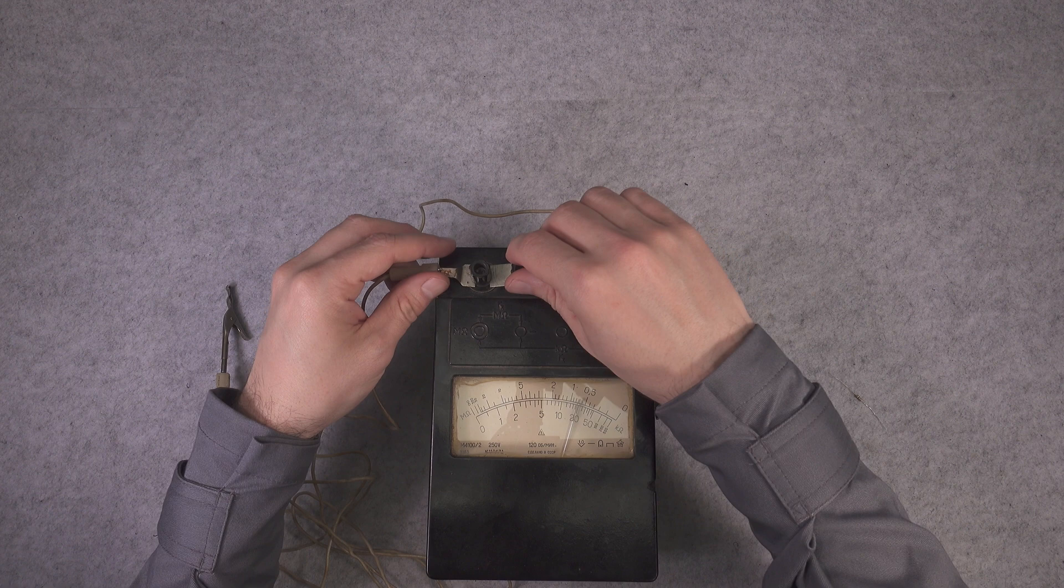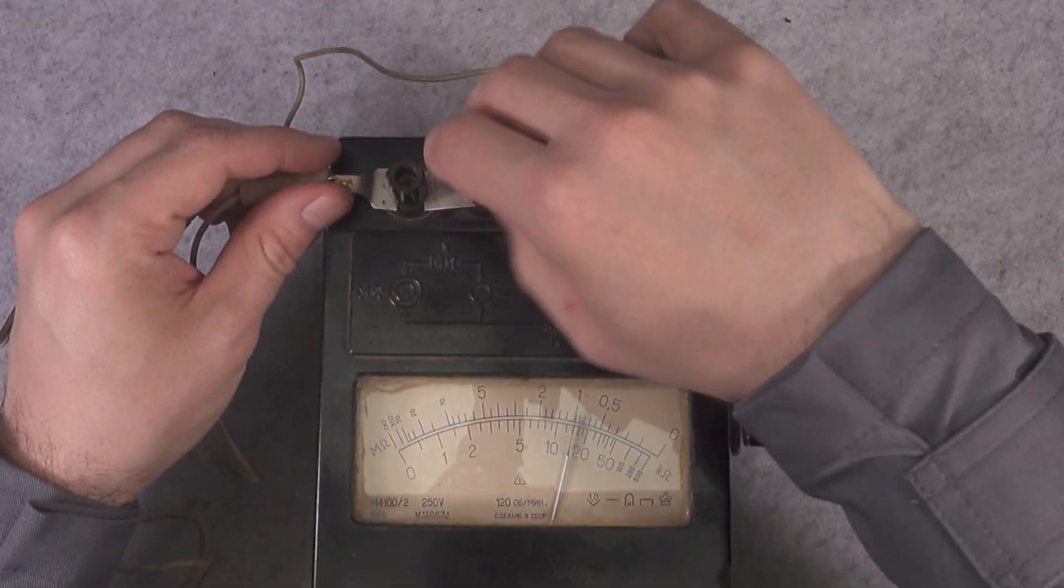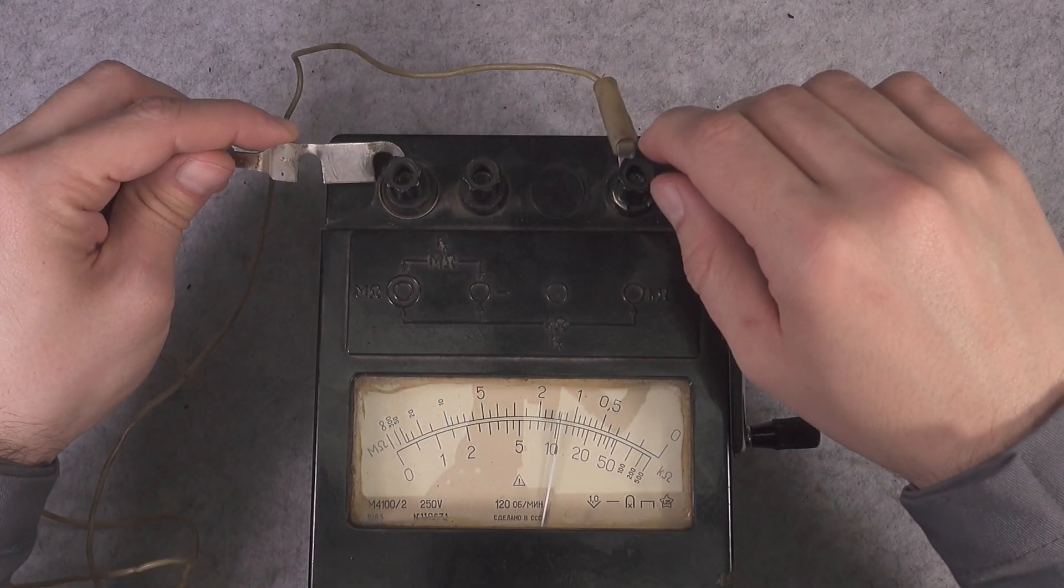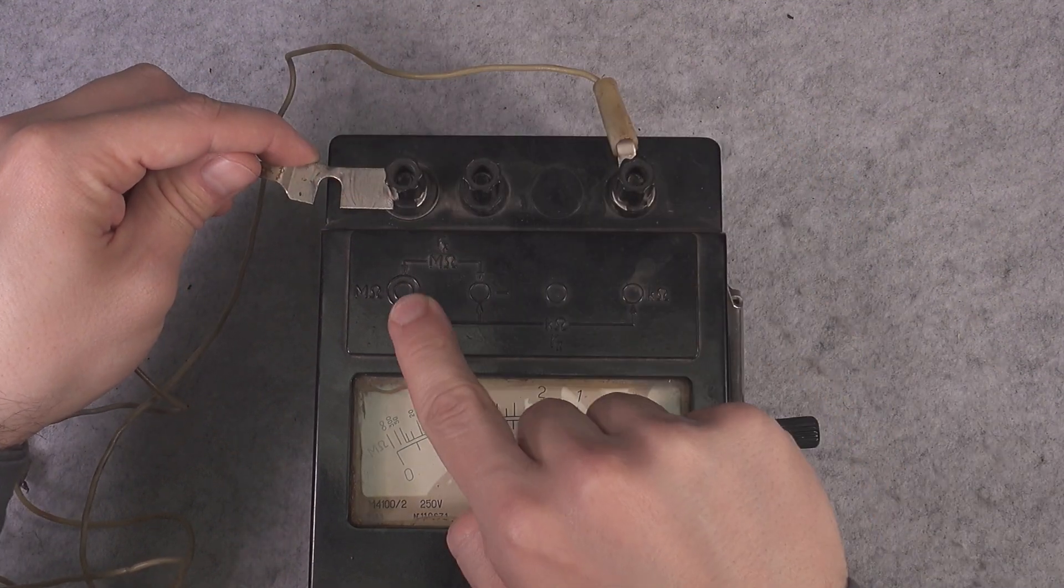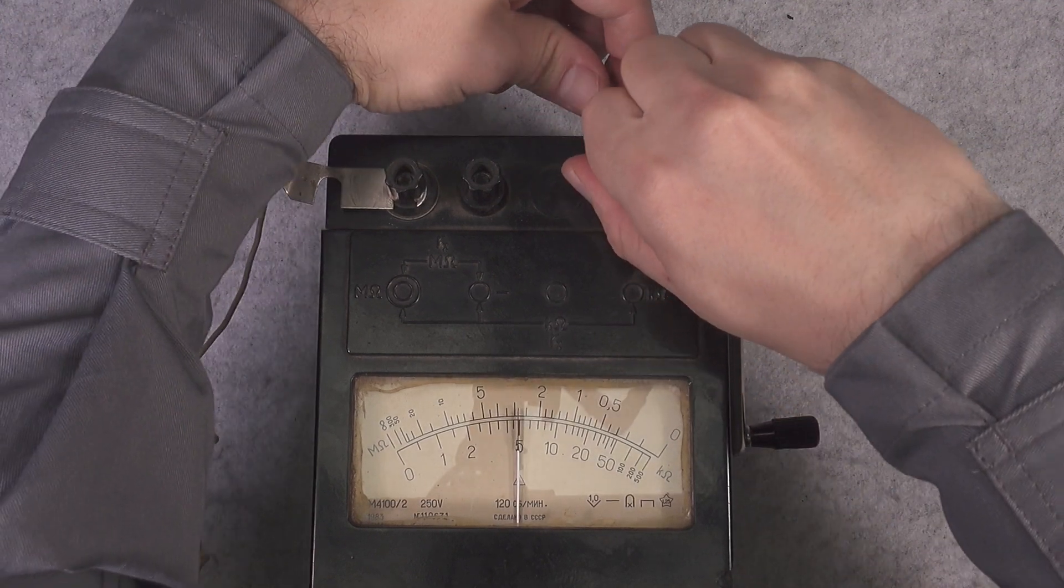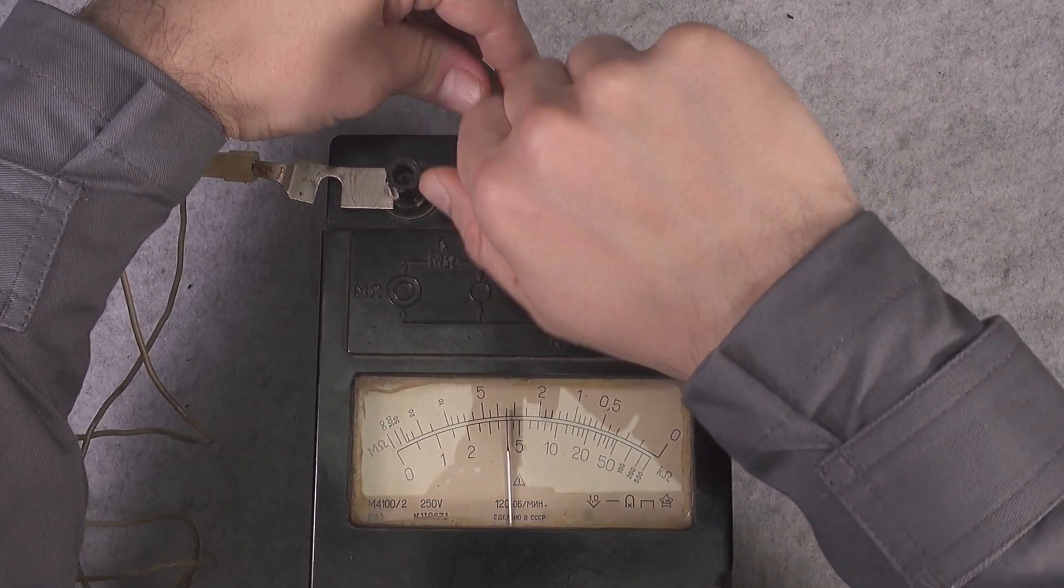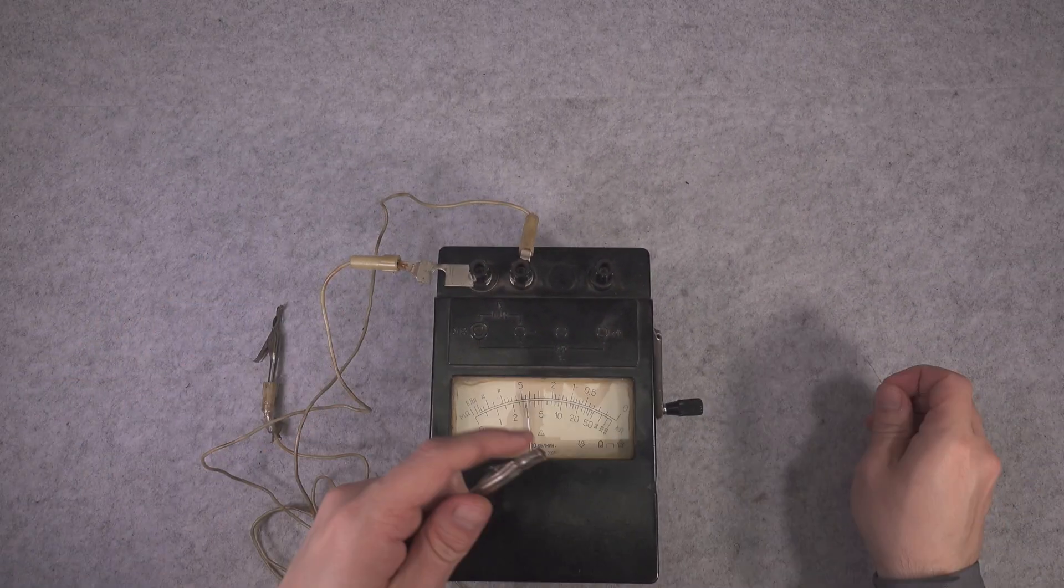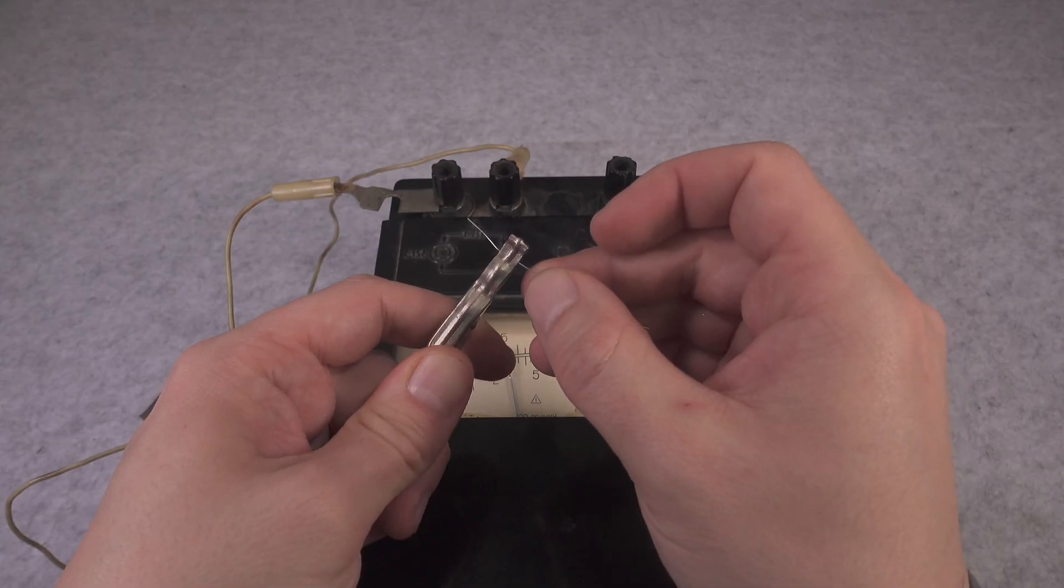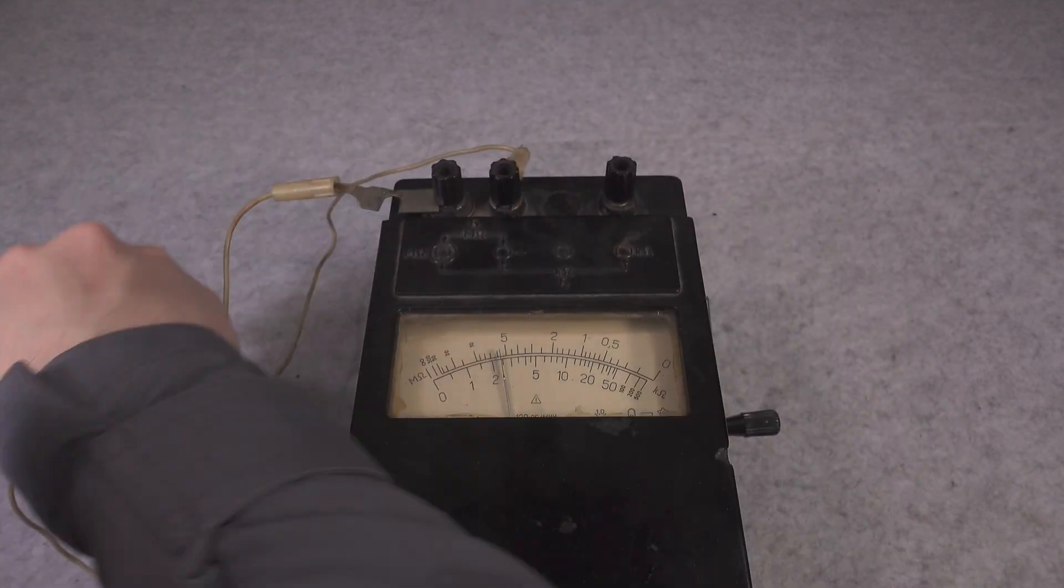Now let's check the mega ohm range. So first we are going to undo those terminals and I'm going to grab one terminal over there because our mega ohms are here and connect it there. So here goes our resistor, we are going to connect a mega ohm. One, here we've got it.